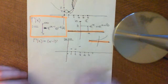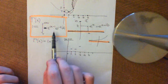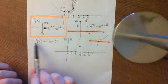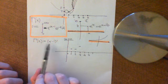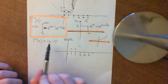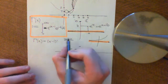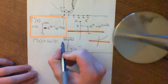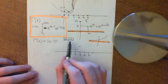I stated two things: that this function was defined on x greater than zero, and that the gamma function evaluated at x was equal to x minus one factorial. I need to give explanations for these two things. The second one — that this function is defined on x greater than zero — is easy.